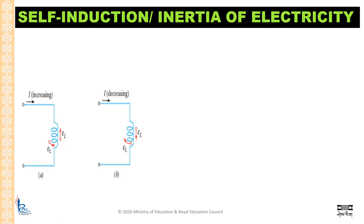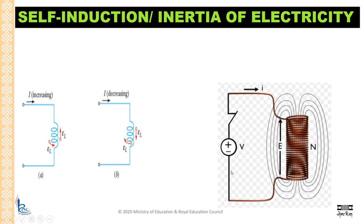You can see in the diagram, when the switch is on, current starts to flow and will start to grow. So when current starts to increase, there will be flux induced here, which will induce EMF in this coil. That induced EMF will oppose the source EMF. This is called self-induction or inertia of current.